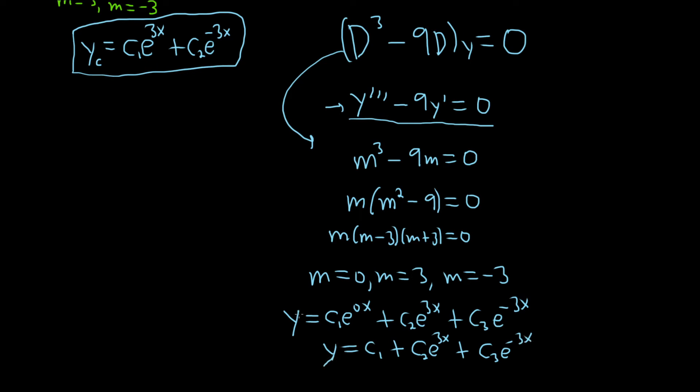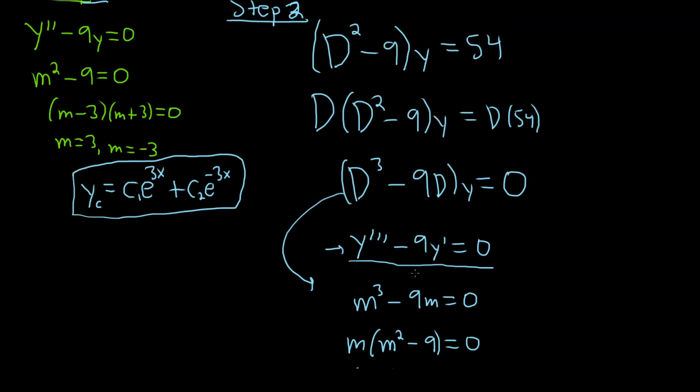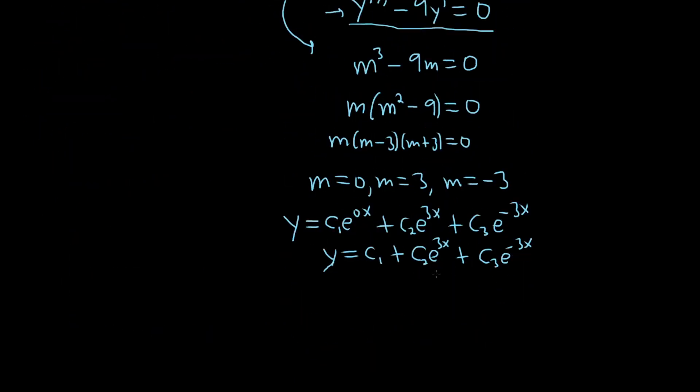So this is a solution to this DE. And we can argue that this is also a solution to the one up here, to the original one. So these should all be solutions, each of these. So what's happening basically now is that this piece here is your yc. So this piece here must be your yp.